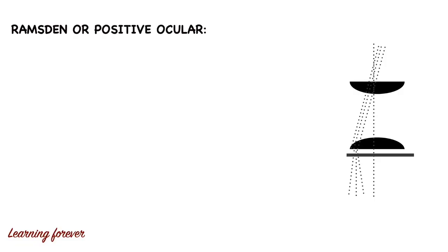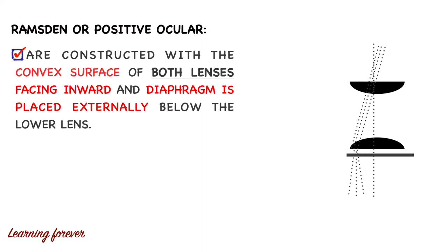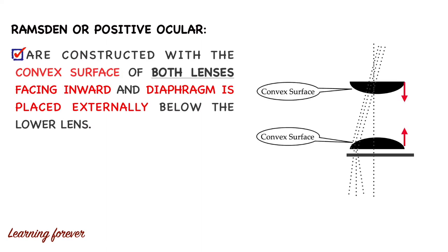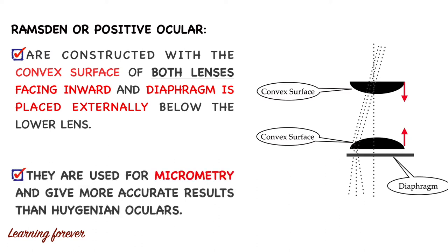The second type is Ramsden, also called a positive ocular. These are constructed with the convex surface of both lenses facing inward, and the diaphragm is placed externally below the lower lens. They are used especially for micrometry — measurement of the size of small objects such as bacteria and parasites — and give more accurate results than the Huygenian ocular.